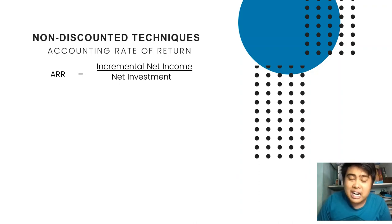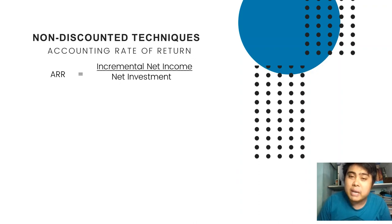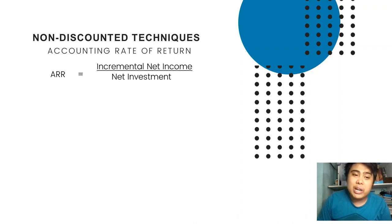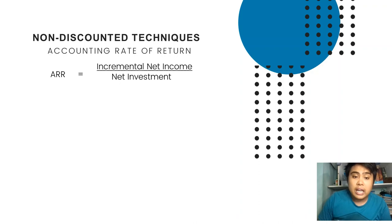ARR is very similar to those formulas, but the word 'investment' in capital budgeting is not simply investment — we use the term 'net investment.' So we substituted the denominator: we use net investment rather than investment or asset. Based on that, ARR is a concept adapted by capital budgeting from traditional accounting.